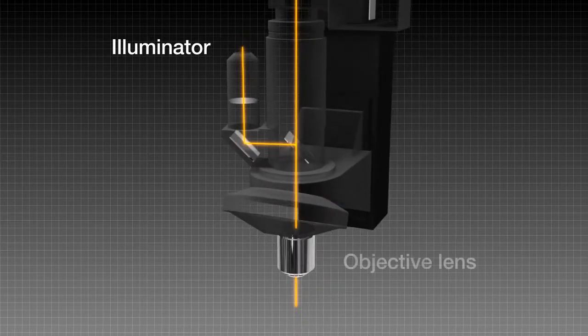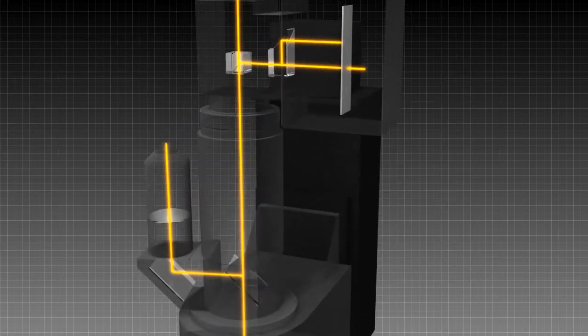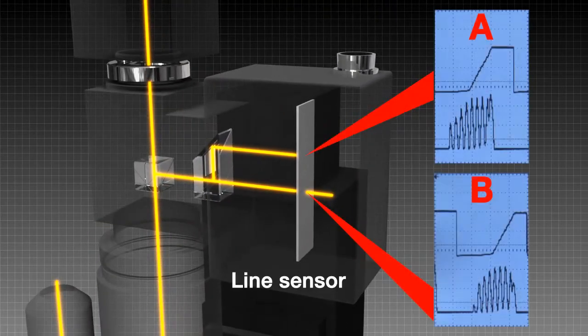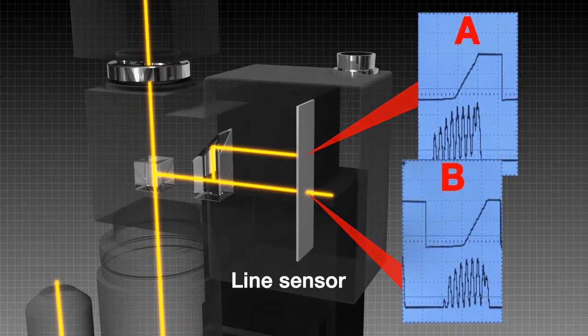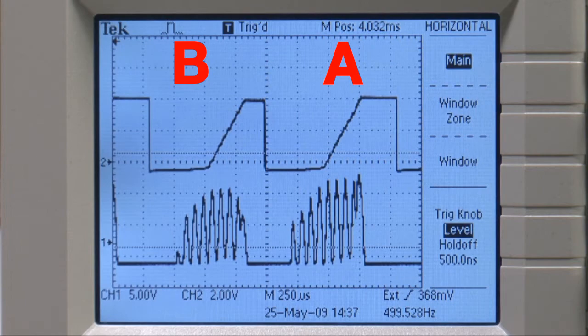In the microscope's optical system, the field stop and focal positions are the same. Applying this principle, the line sensor is positioned at right angles to the projected stripe pattern. The signal that enters the line sensor has a waveform like this.